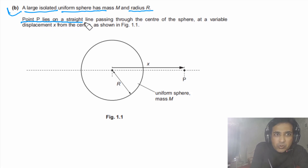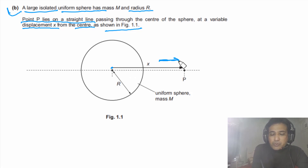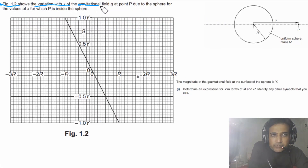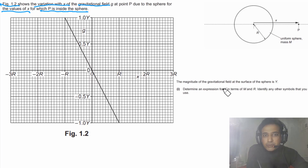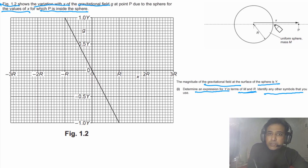Part b: a large isolated uniform sphere has mass M and radius R. Point P lies on a straight line through the center at variable displacement x from the center. Figure 1.2 shows the variation of gravitational field g with x. For values of x where P is inside the sphere, the magnitude of g at the surface is y. Part b1 asks us to determine an expression for y in terms of M and R.